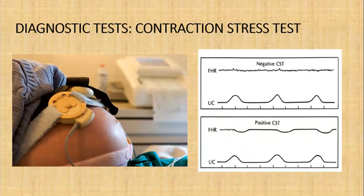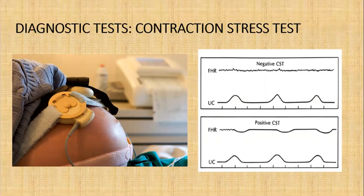You can also look at estriol levels. Serial 24-hour maternal urine samples or serum specimens are collected to determine fetoplacental status. Decreasing estriol levels usually indicate deterioration.